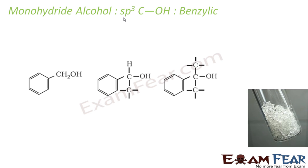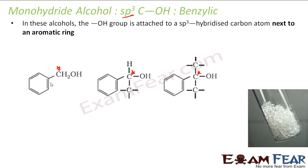Next is benzylic alcohol, which is also sp3 hybridized. Here the star carbon is not part of the benzene ring — don't get confused. This is not sp2, this is sp3, this is normal alcohol. The star carbon is attached to a benzene ring — that's what makes it benzylic alcohol. Benzylic alcohols are also generally solids. You can also classify benzylic alcohol as one degree, two degree, or three degree based on how many carbons the star carbon is attached to.